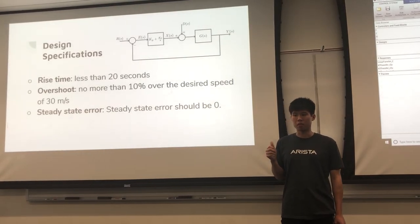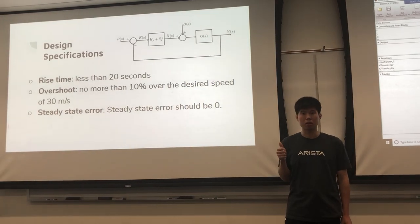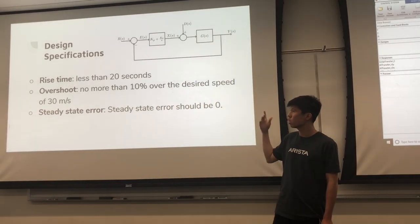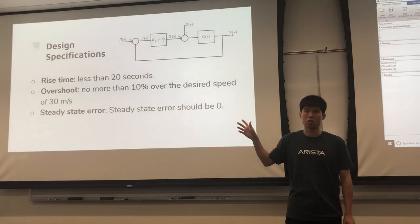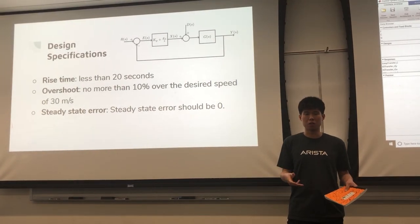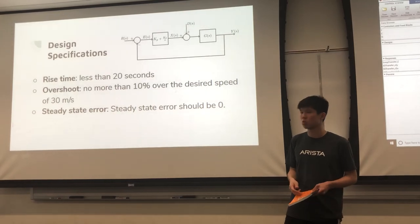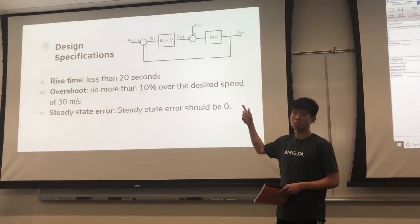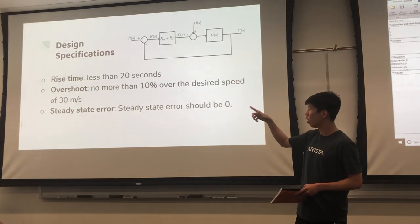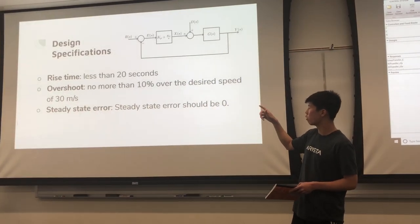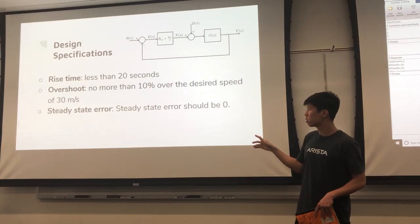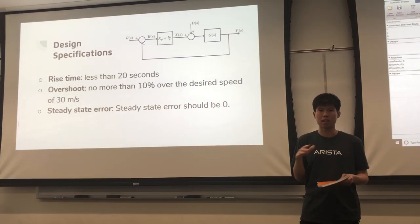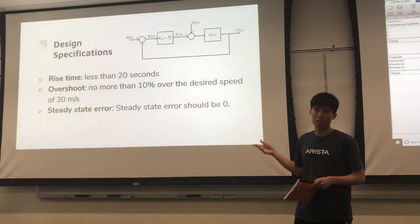With our first-order system, we have a rise time that's a little bit long at 44 seconds. We want to introduce a controller that can meet these design specifications for a more ideal system for the autonomous car's cruise control. We want rise time less than 20 seconds, overshoot no more than 10% over the desired speed of 30 meters per second, and steady-state error to stay at zero with this new controller.